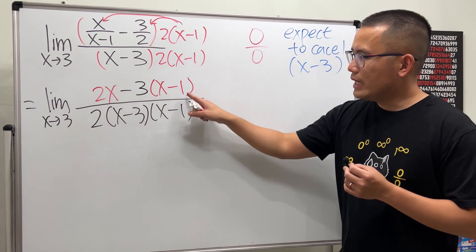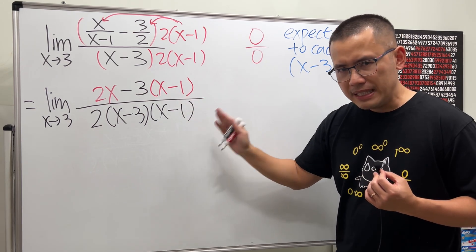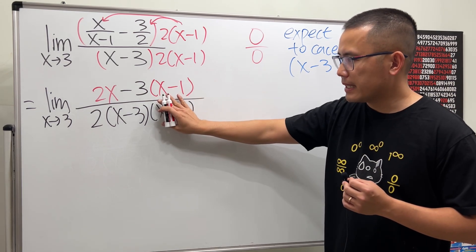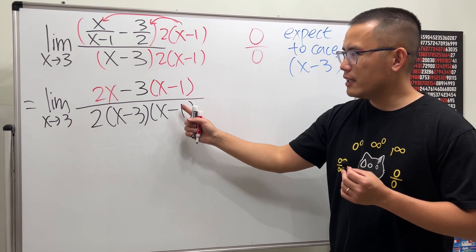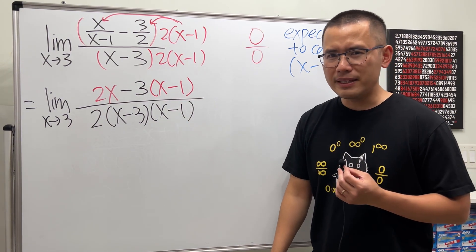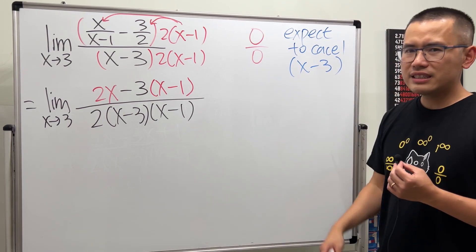And now we see we have x minus 1, x minus 1 here, and many students will just cancel the x minus 1, which is not correct. Well, you're not expecting to cancel x minus 1, you're expecting to cancel what? x minus 3.